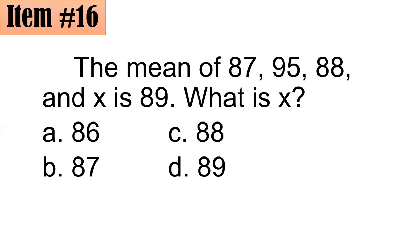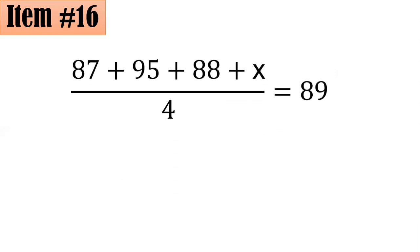Number 16. The mean of 87, 95, 88, and X is 89. What is X? Should it be 86, 87, 88, or 89? From here, to get the mean, we are aware that to get the mean of a certain number of scores, all we have to do is add these scores and divide by the number of scores. So let's say we don't know what the fourth score is. So let's say it's X. So we have here (87 + 95 + 88 + X) / 4 = 89.